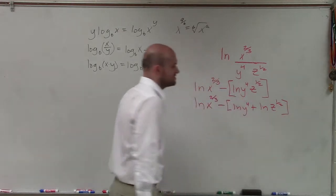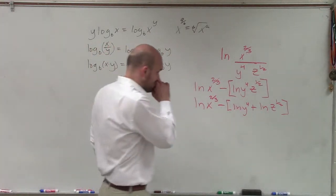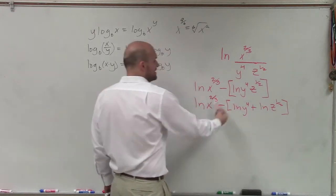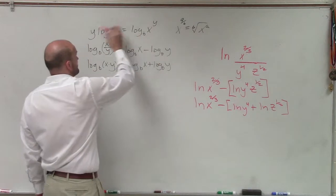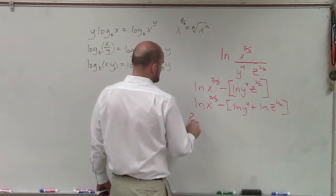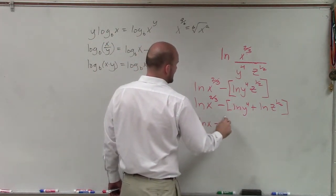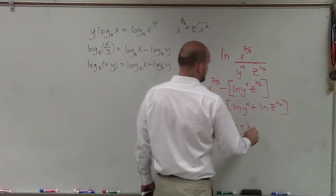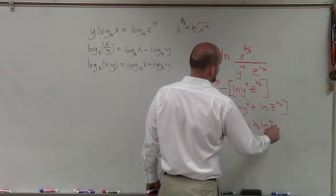And it's very important for us to provide those brackets to make sure that I'm not just dividing the ln y to the fourth, but I'm dividing both of these terms. Now, I can take my exponents and bring them in front as a product. So therefore, it would be 2 thirds ln of x minus 4 ln of y plus 1 half ln of z.